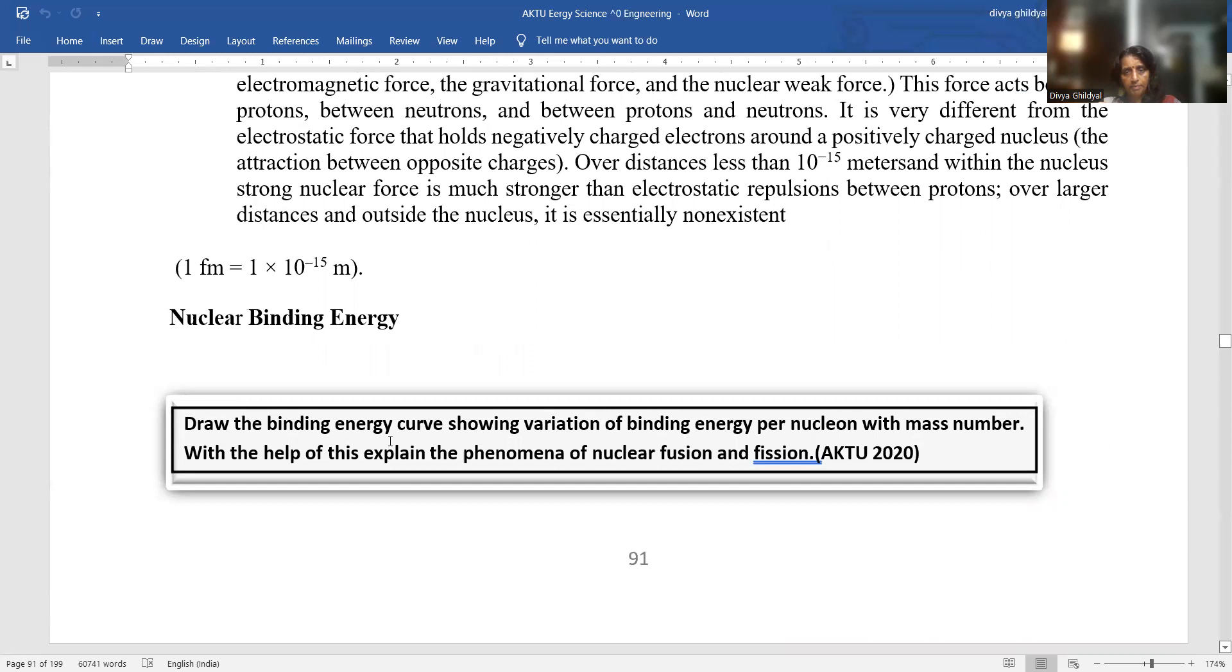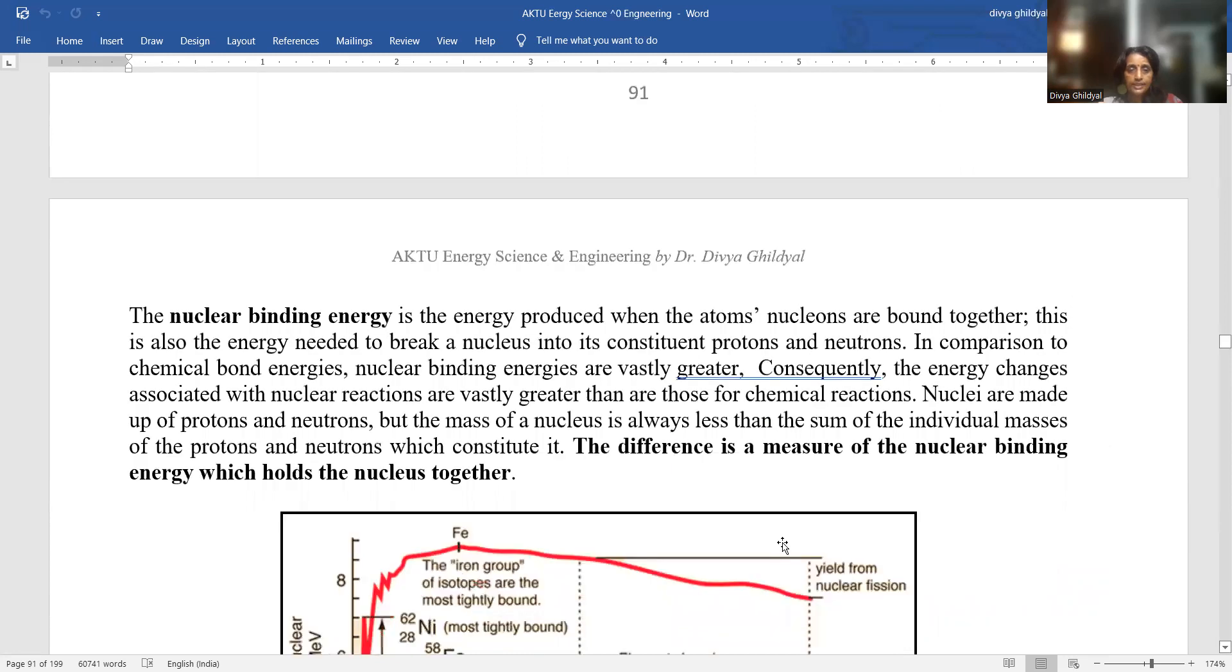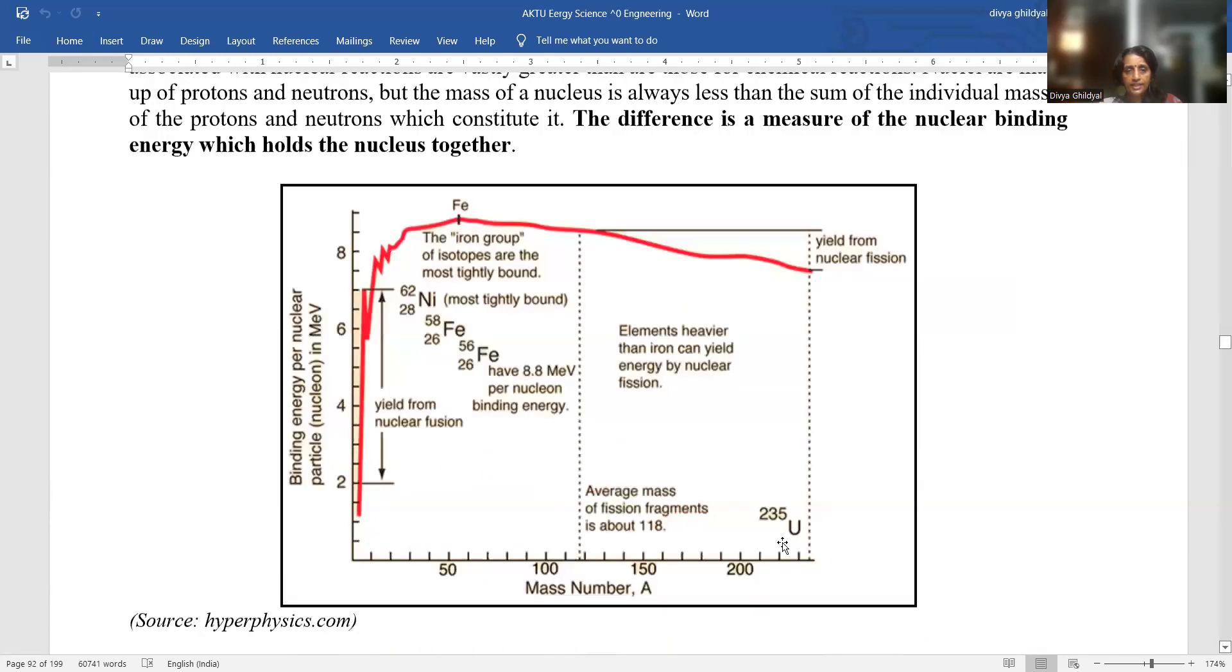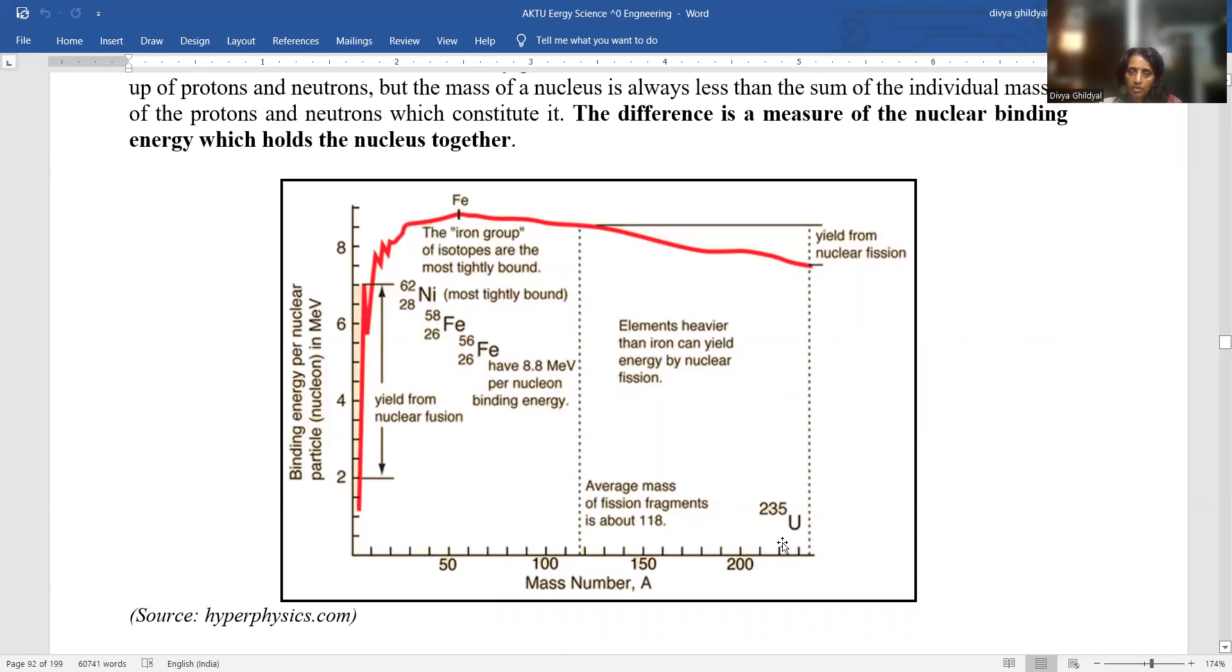Nuclear binding energy. Binding energy curve. This has been asked twice. Draw the binding energy curve showing the variation of binding energy per nucleon with mass number. However, with the help of this, explain the phenomena of nuclear fusion and fission. See, this is your binding energy curve. It is very important. You need to memorize it. And this unit compared to the first unit is comparatively easy.